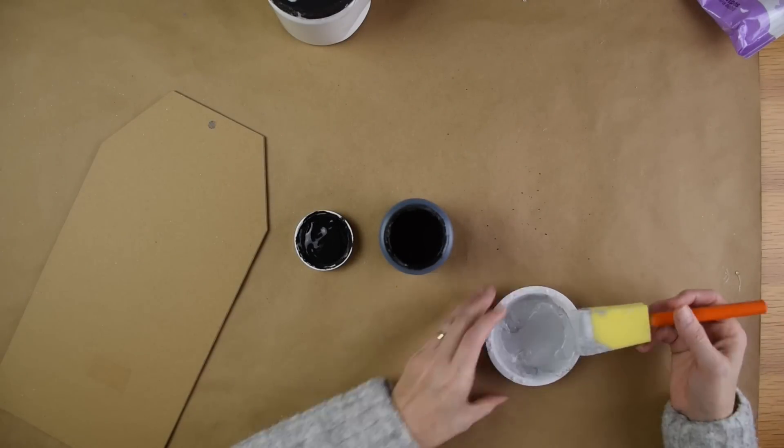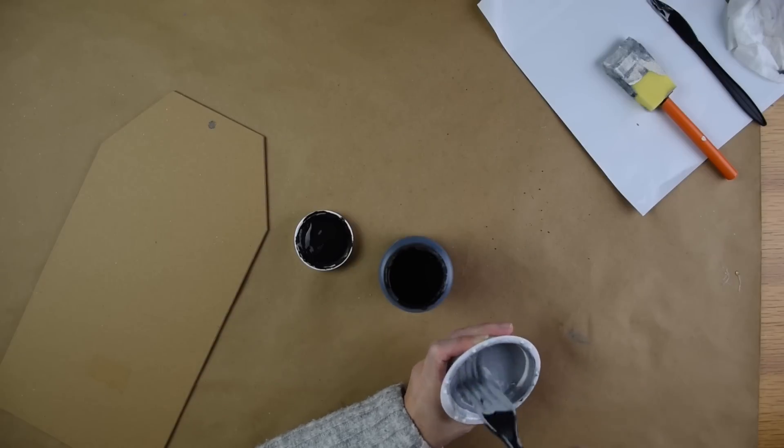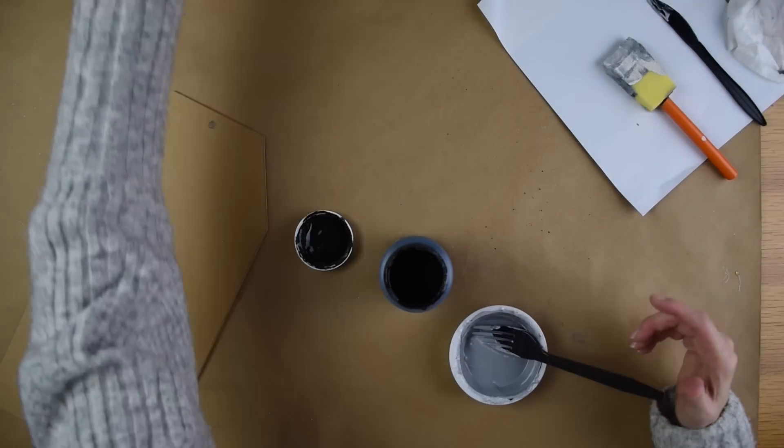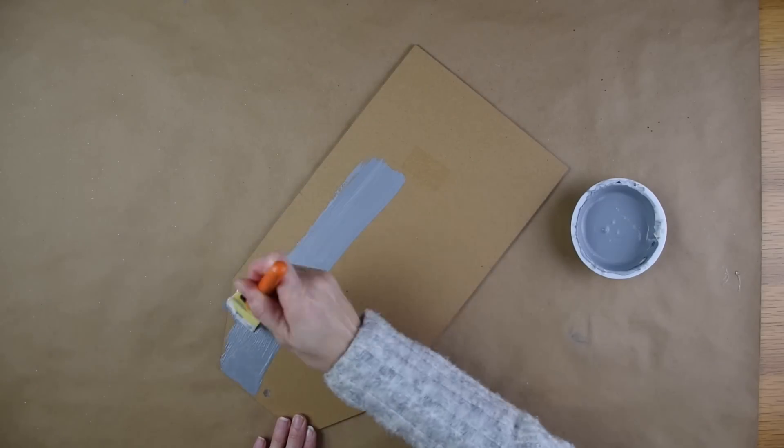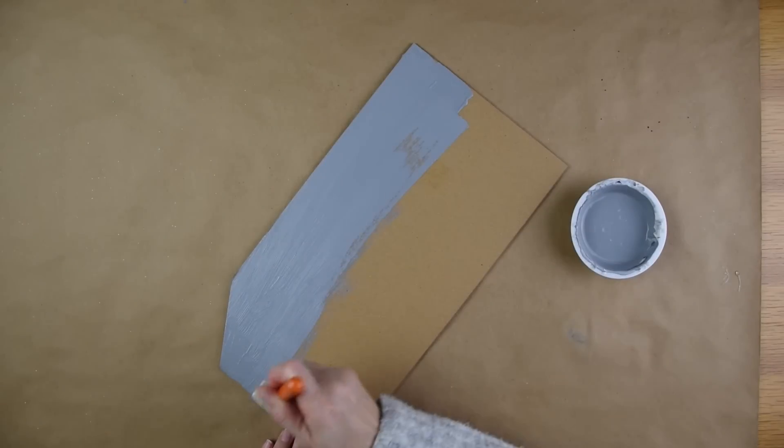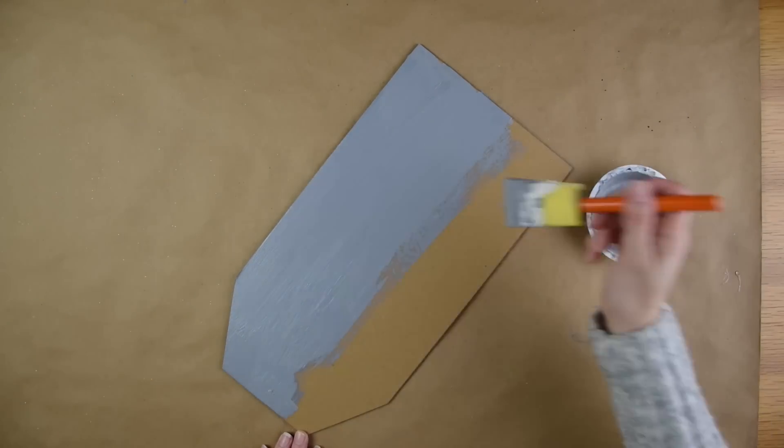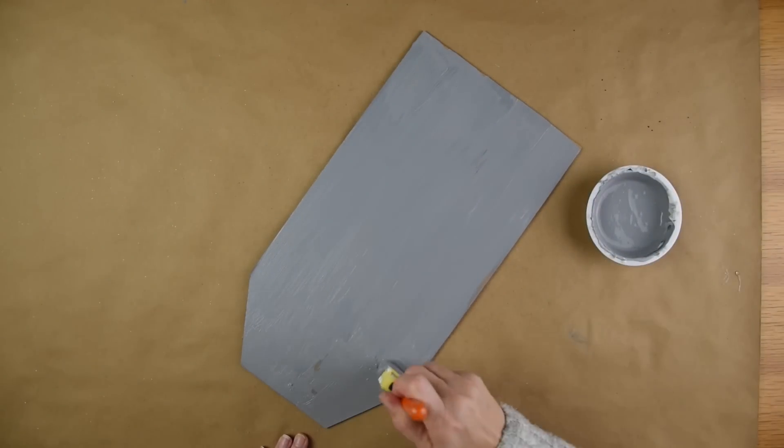As I previously mentioned if you have light gray already then go ahead and use that. I just do not have any on hand. I'm using my foam brush to paint my sign with and I only needed one coat. If you use acrylic paint then you might need to use two coats.